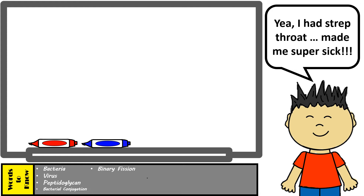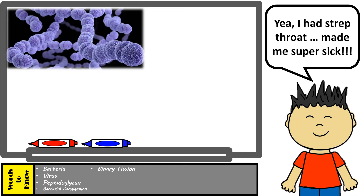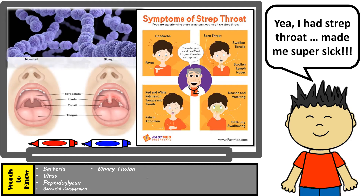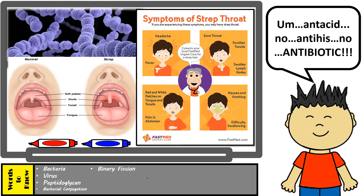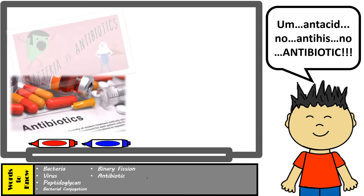Strep throat is caused by a bacteria known as Streptococcus, which, as we mentioned, is a spherical shape, and can lead to some severe symptoms such as fever, red swollen tonsils, sore throat, etc. Antibiotics are prescribed drugs meant to kill bacteria by targeting their common prokaryotic structures.